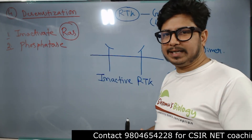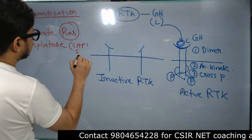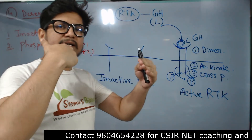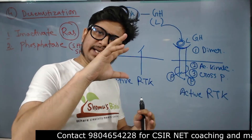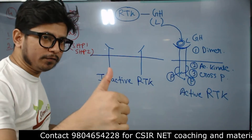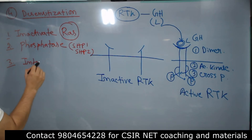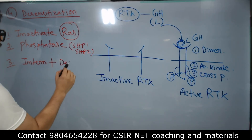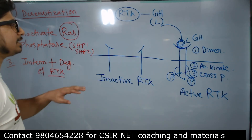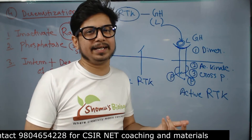The second step that can desensitize this pathway involves phosphatase enzymes. Specific phosphatase enzymes will cut and cleave the phosphate groups from the intermediates of the cell signaling pathway. Examples are SHP1 and SHP2 - these are the types of phosphatases used. SHP1 and SHP2 cut the phosphate groups from all the different intermediates like PI3K, AKT, and MTOR, thereby switching off the pathway.